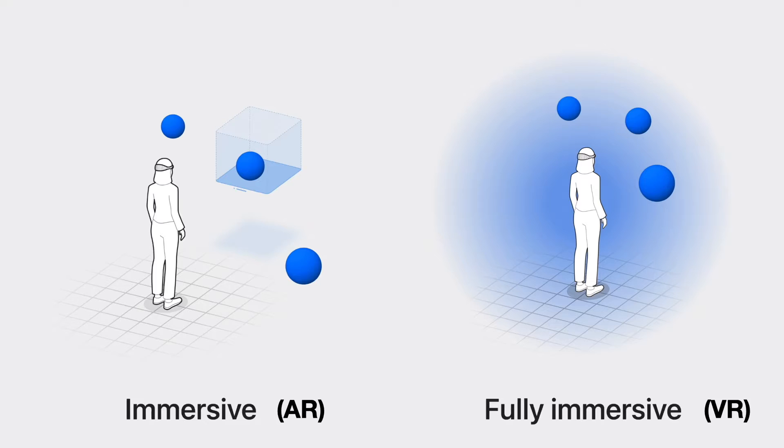VisionOS allows us to develop apps for two basic types of experiences. Apple calls them immersive and fully immersive, which is confusing because they simply mean augmented reality and virtual reality. On a side note, if anyone at Apple is watching, it would be helpful to have no marketing jargon in the developer documentation.